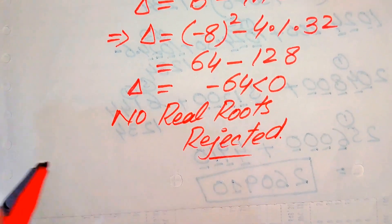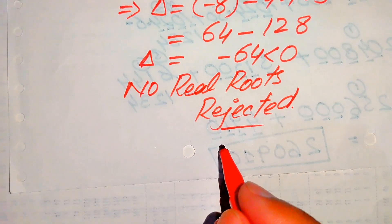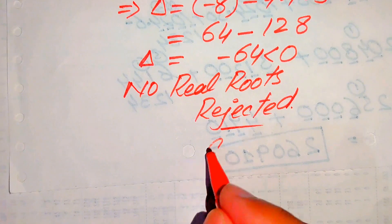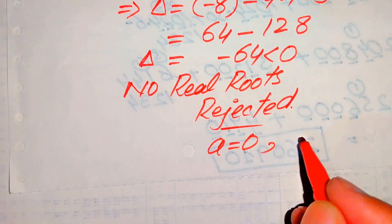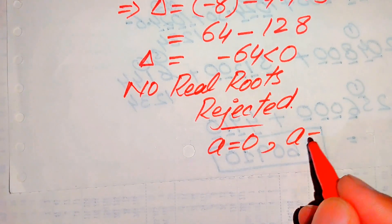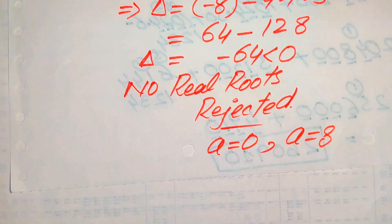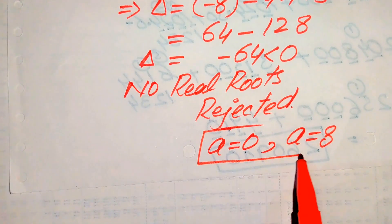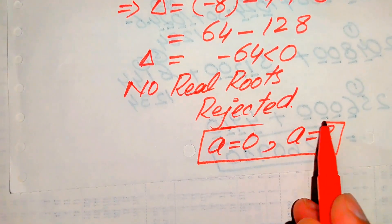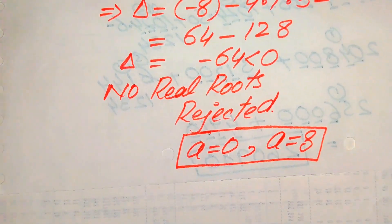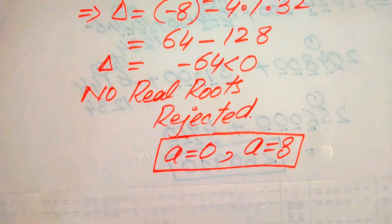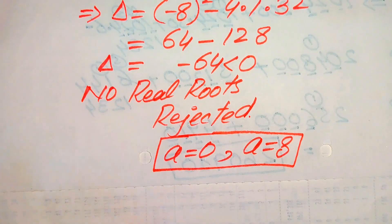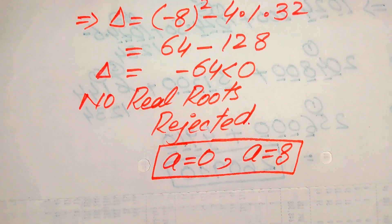Therefore we have only two real roots: a = 0 and a = 8. These are the two final roots of the given equation. Thank you so much for watching this video — please subscribe to my channel for more exciting videos.